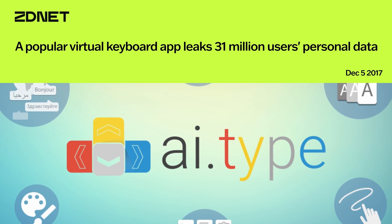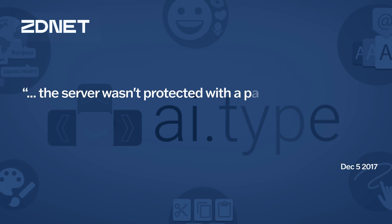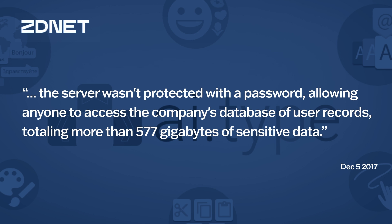The unfortunate reality is that a lot of these keyboards don't hold up under scrutiny. AI Type was a popular keyboard that in 2017 leaked the personal information of over 31 million customers because of a lack of password protection on the company's database server. This breach exposed names, phone numbers, email addresses, and even text typed using the keyboard.